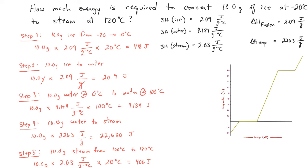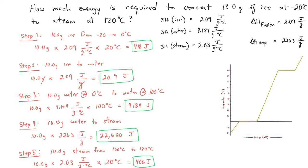Now we have five answers: step one gave 418 joules, step two 3,340 joules, step three 4,184 joules, step four 22,630 joules, and step five 406 joules. Adding all of those up, our total is 27,659 joules, or approximately 27.7 kilojoules.